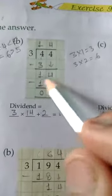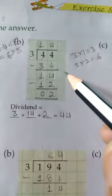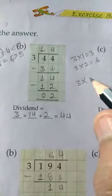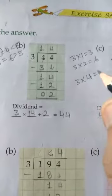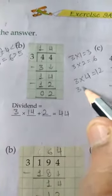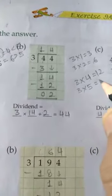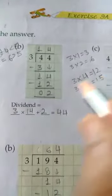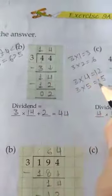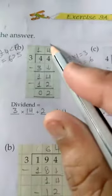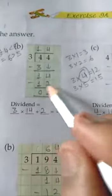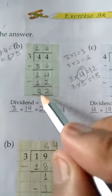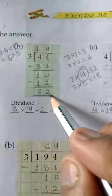14 divided by 3: 3 times 4 is 12, and 3 times 5 is 15. So 15 is greater than 14 and 12 is smaller. Write 12 here and quotient 4 here. 14 minus 12 is equal to 2, so write 2 here. So the remainder is 2.